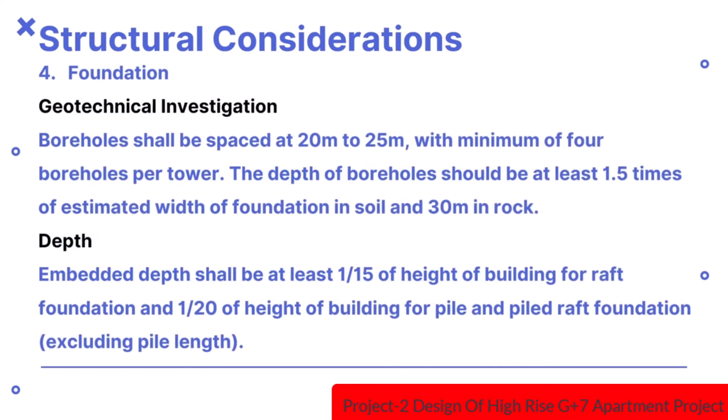For geotechnical investigation, besides normal investigation, potential analysis and estimation of soil spring constants along with modulus of subgrade reaction shall be done. Bore holes shall be spaced at 20m to 25m with a minimum of 4 bore holes per tower. The depth of bore holes should be at least 1.5 times the estimated width of foundation in soil and 30m in rock.